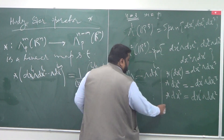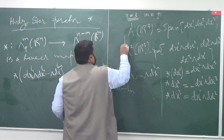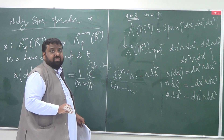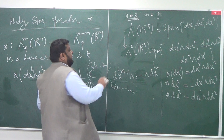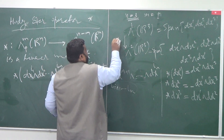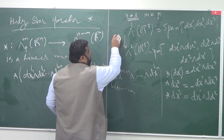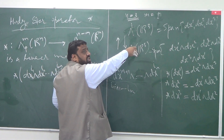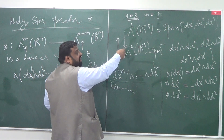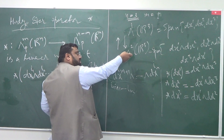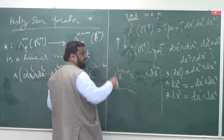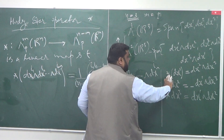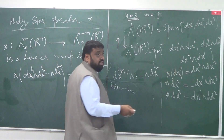Here I am treating star as a map from 1-forms to 2-forms in R3. But I can also treat star as a map in the other direction — from 2-forms to 1-forms. In other words, I can take M equal to 2 and N equal to 3, and then it is going to be a map from 2-forms to 1-forms.